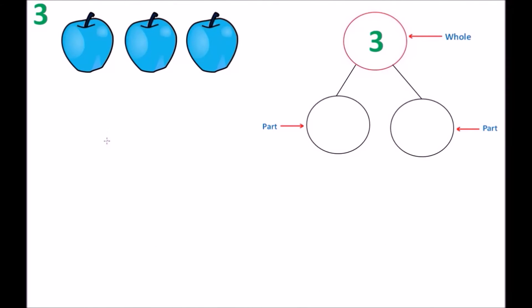Hello everyone, it's Miss Judy, and in today's class we're going to take a look at the number three with our three apples. So we know the first number bond that we can create is with a zero. So we have a zero and a three. We put the zero and the three into our number bond to show the left part and the right part.